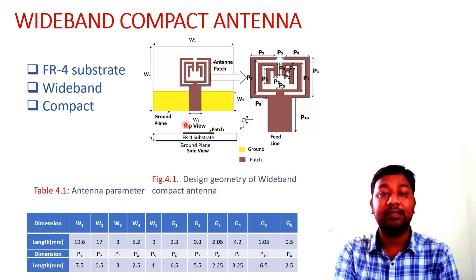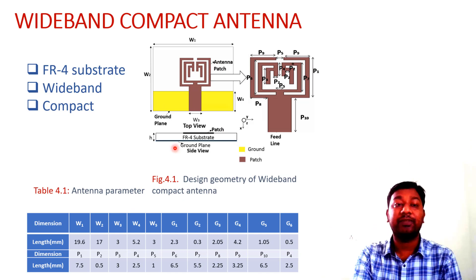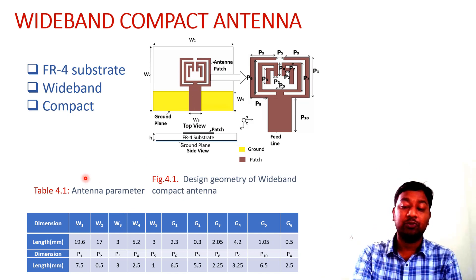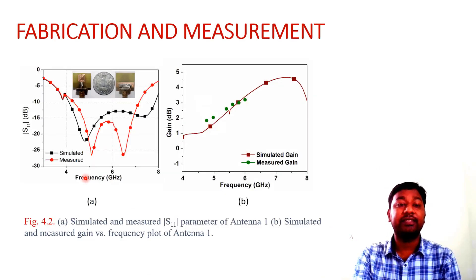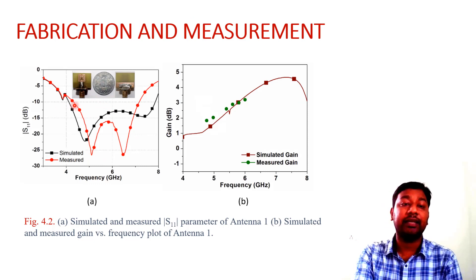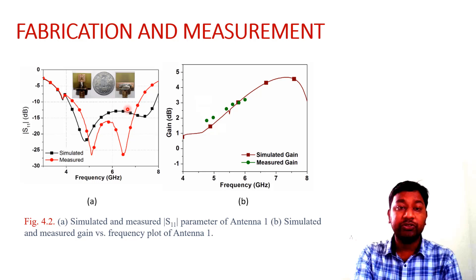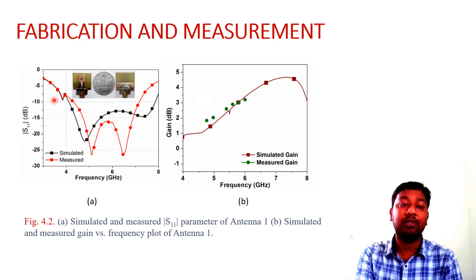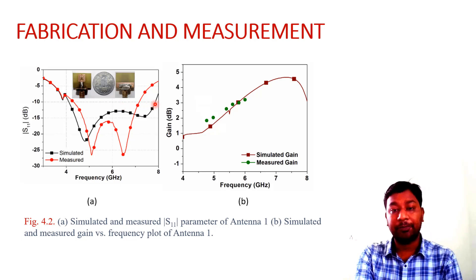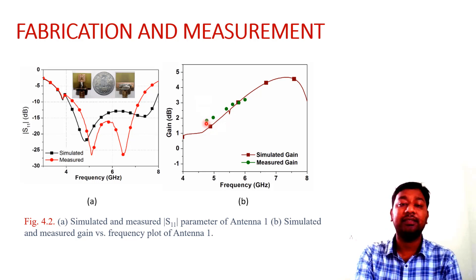Those are the antenna parameters and design geometry. After fabrication, we found the antenna covers 4 to 6.5 GHz measured, while the simulated band covers 4.1 to 7.1 GHz. We also found the gain at those particular frequency bands is approximately 2 dB, both simulated and measured.